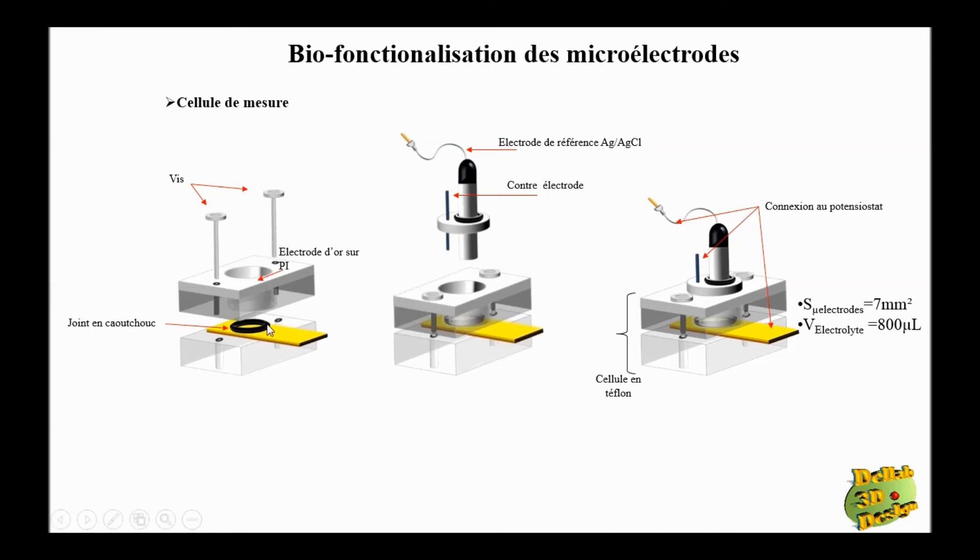Here we have rubber ring and two screws. And here the whole of the electrochemical cell. So here we have silver, silver chloride reference electrode, platinum wire.